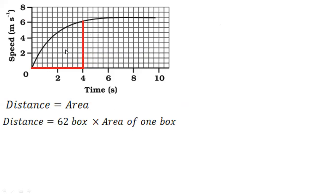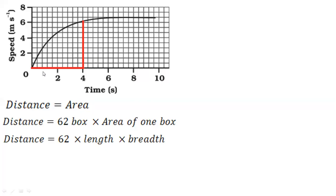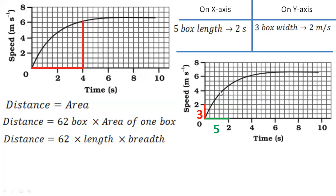So 62 boxes into the area of one box — that is the formula, and that is a rectangle. Area of a rectangle is length into breadth. But we need to know the values of length and breadth only then will we be able to calculate. To calculate the value of one box, all you have to do is compare the values. We need the value of the x-axis and the value of the y-axis.